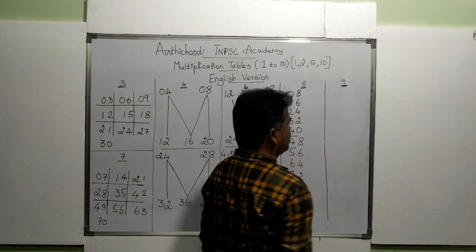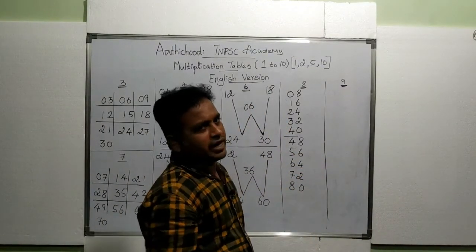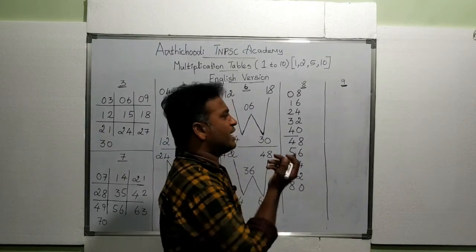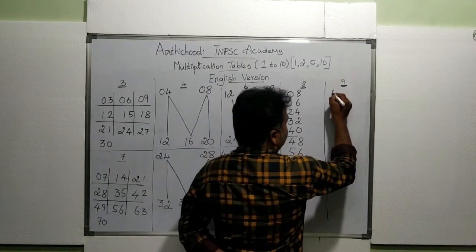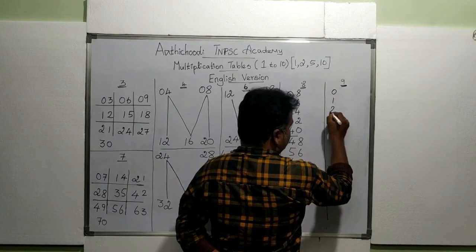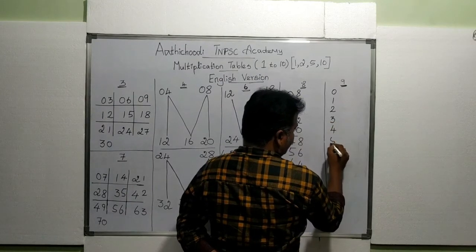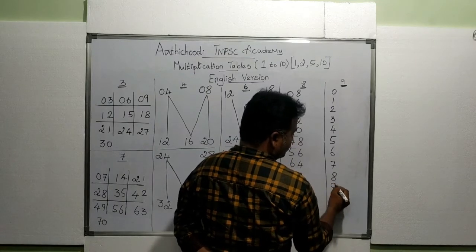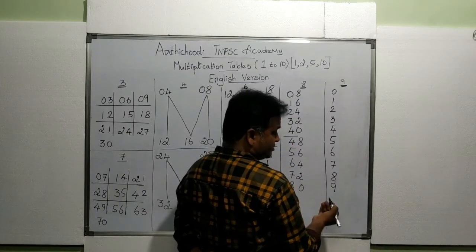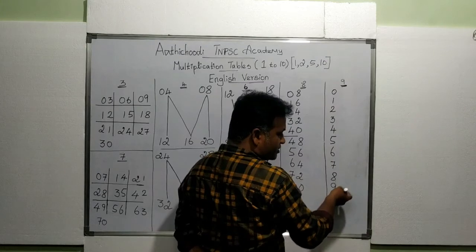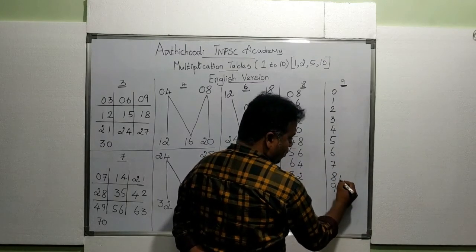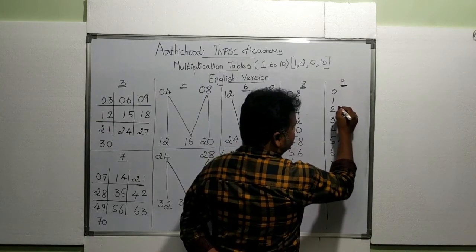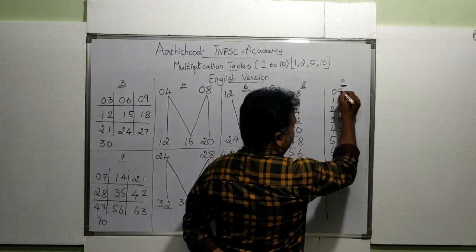Next we are going to learn the ninth table — it's so, so easy! If you know whole numbers from 0 to 9, you can easily write the ninth table. See: 0, 1, 2, 3, 4, 5, 6, 7, 8 — this is the ninth table, so you stop with 9. Next you write the same set of numbers again: 0, 1, 2, 3, 4, 5, 6, 7, 8, 9.